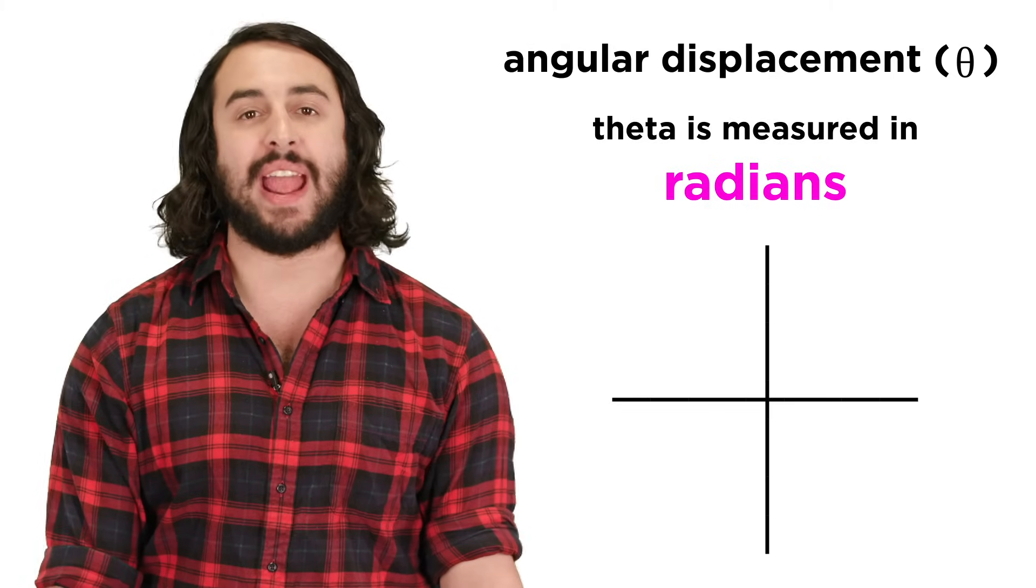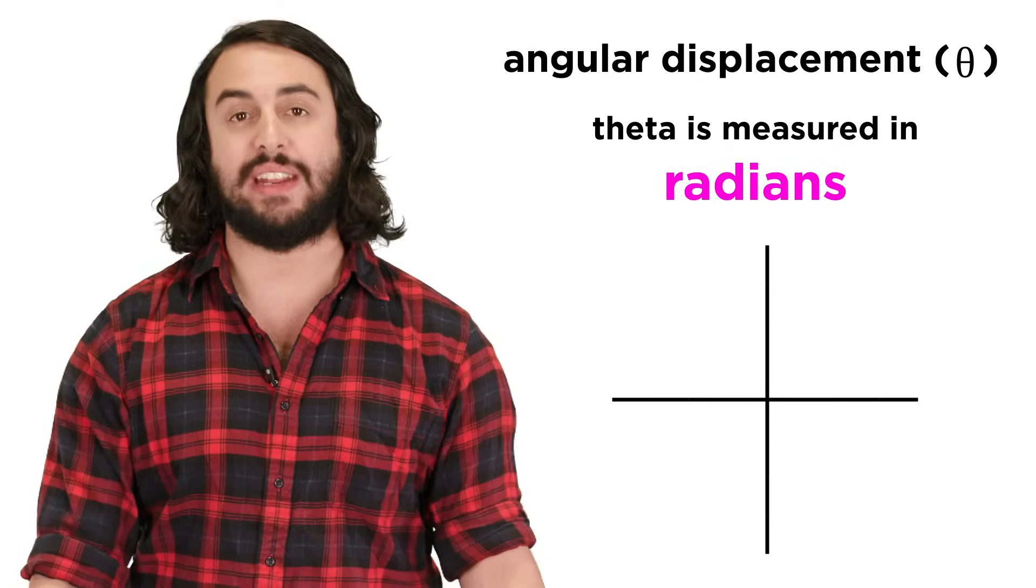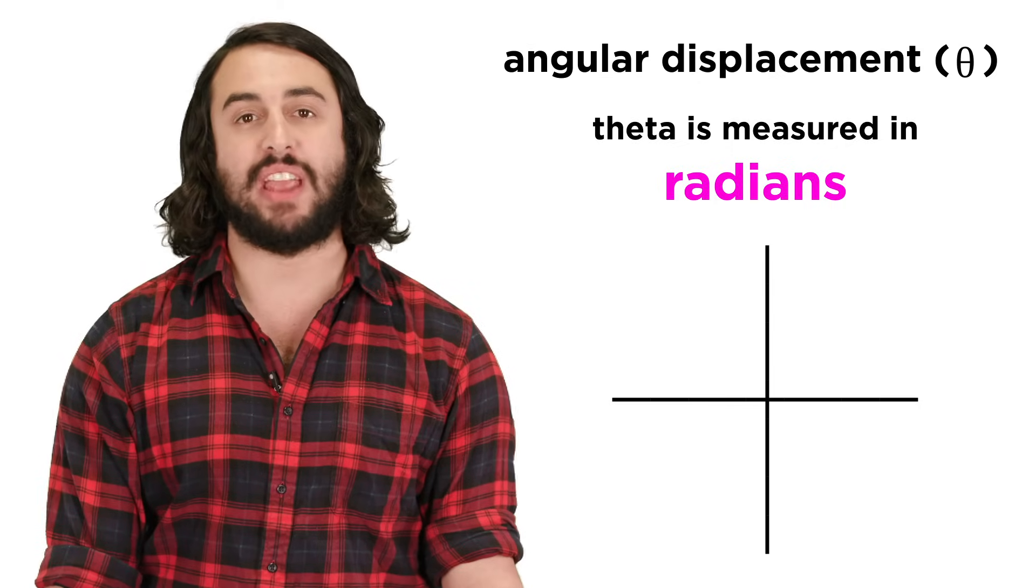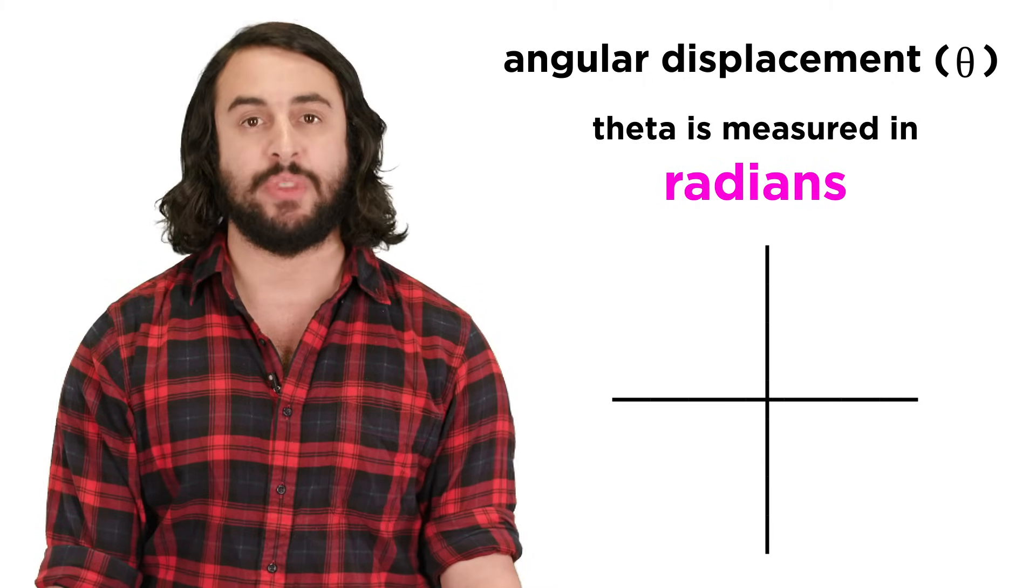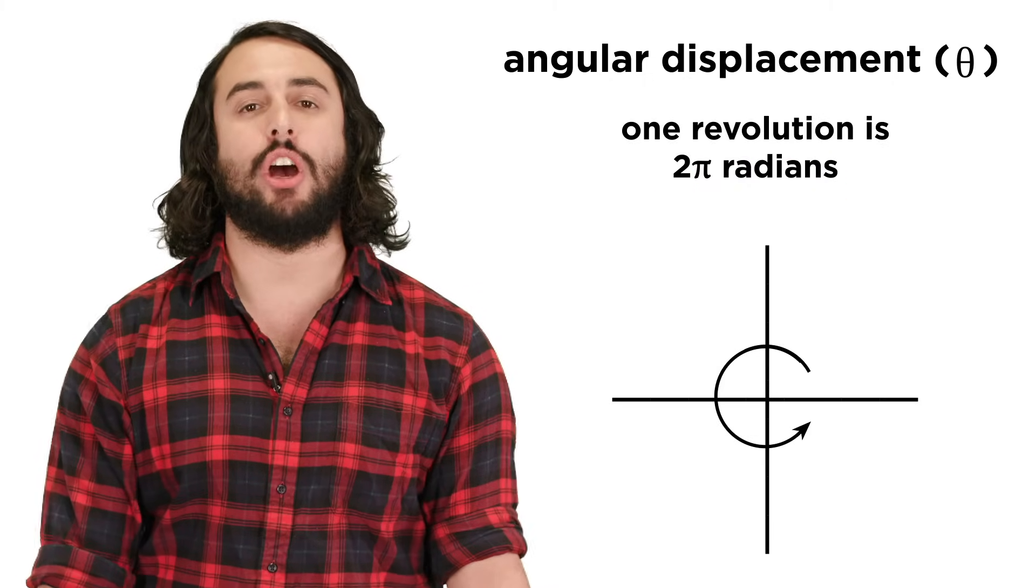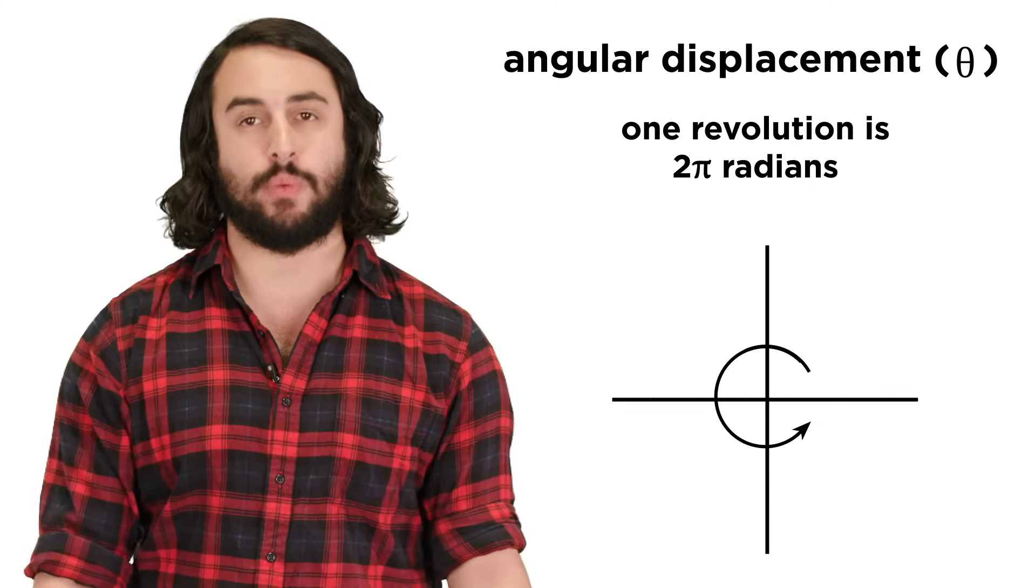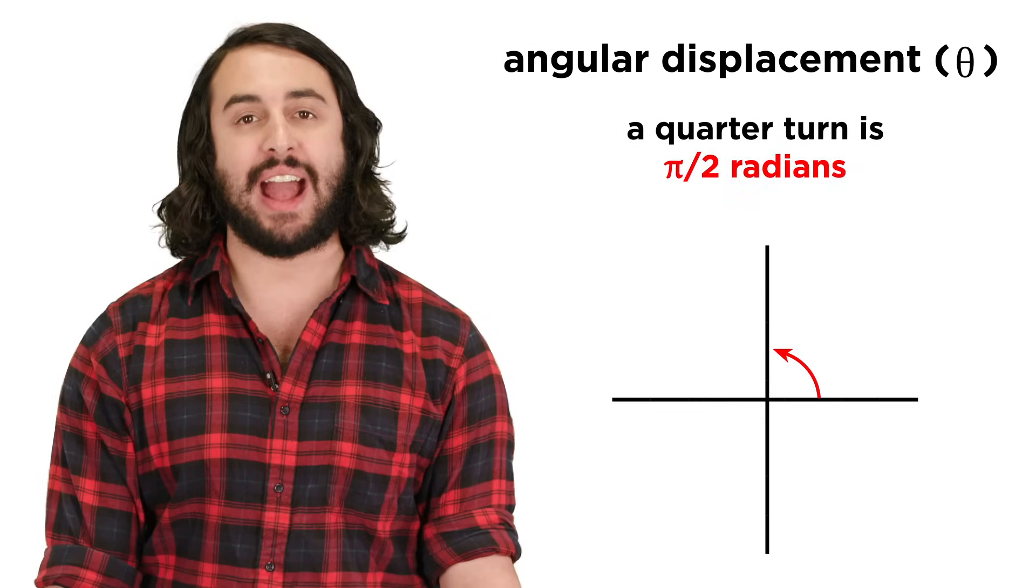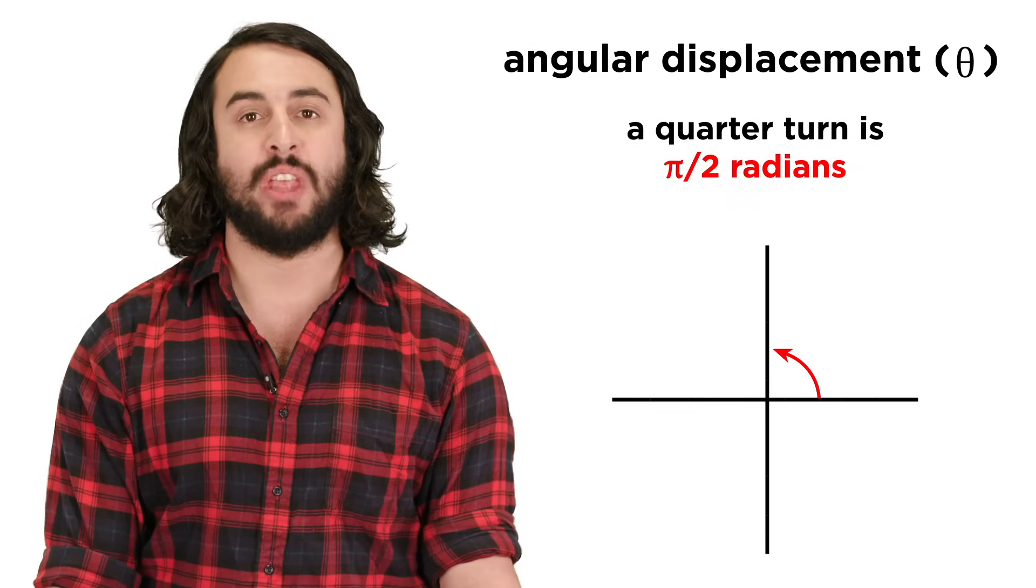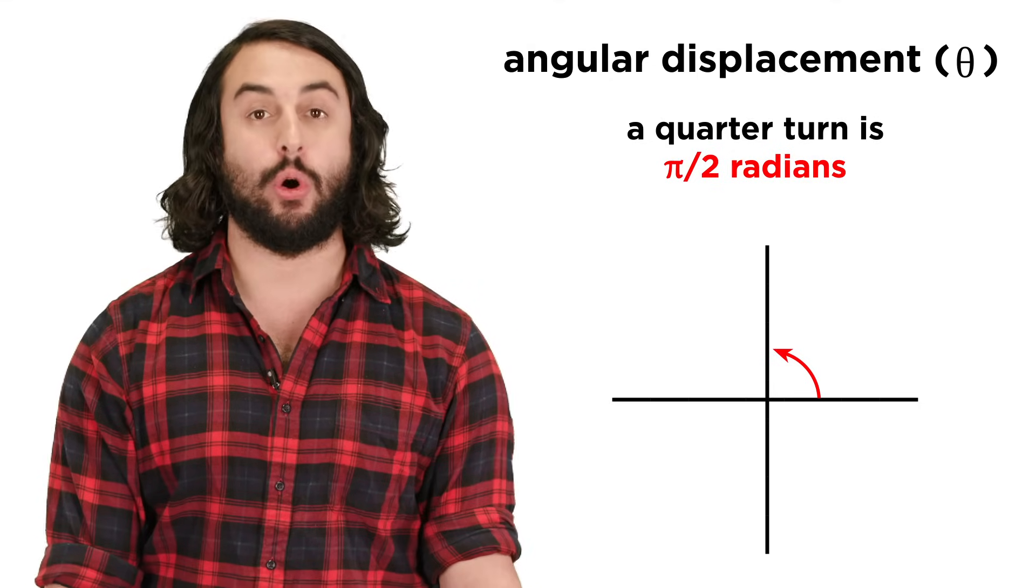The SI unit for angular displacement will not be degrees, but rather radians. We will discuss the derivation and importance of the radian in the upcoming mathematics course, but for now we simply need to know that one full revolution is equal to two pi radians, so if the rotation completed by the object is a counterclockwise quarter turn, the angular displacement is one-half pi radians, or pi over two.